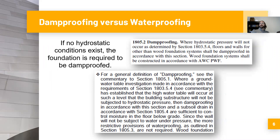The rule for damp proofing is essentially: if no hydrostatic conditions exist, you damp proof. Section 1805.2 says where hydrostatic pressure will not occur, as determined by Section 1803.5.4 — the geotechnical report — floors and walls for other than wood foundation systems shall be damp proofed in accordance with this section. For concrete and masonry foundations, if you do not have a hydrostatic pressure condition but you do have foundation walls that retain earth and enclose space below grade, then damp proofing is your default requirement.